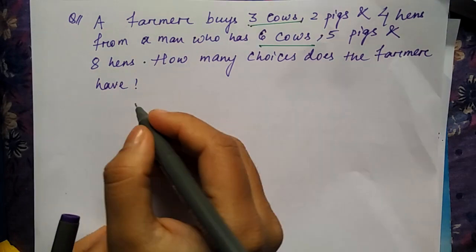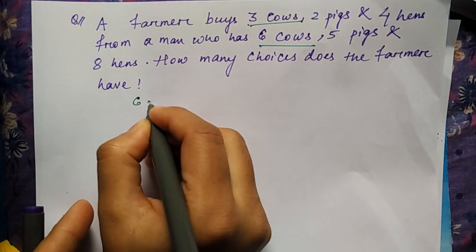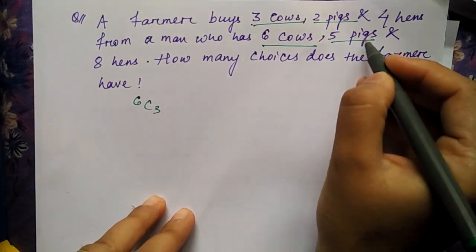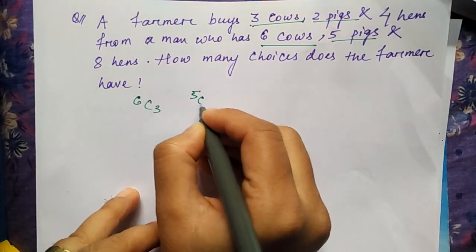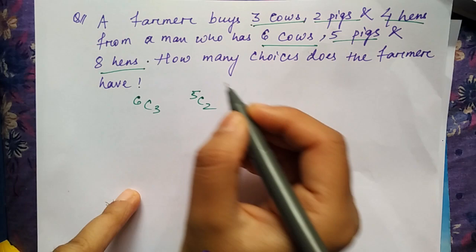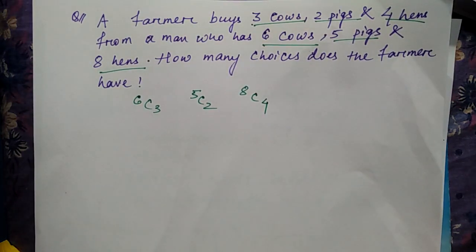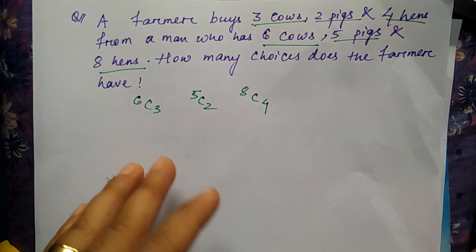Okay, so first thing is you have to select three cows from six cows, so that will be 6C3. Next is two pigs from five pigs, that is 5C2. And four hens from eight hens, so that is 8C4.